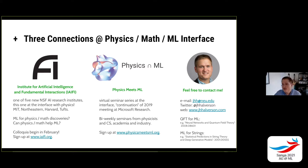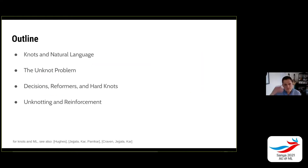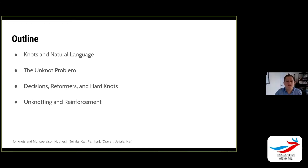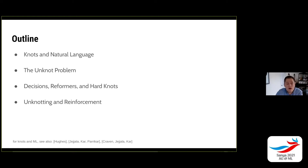You can sign up at physicsmeetsml.org. And if you ever want to talk about this stuff, I'm always looking to make new friends. What I want to tell you about is this paper that came out fairly recently with Sergey, Piotr, and Fabian. It's about a particular problem — the unknot problem in knot theory — but one of the other things we're interested in is using techniques from natural language processing.